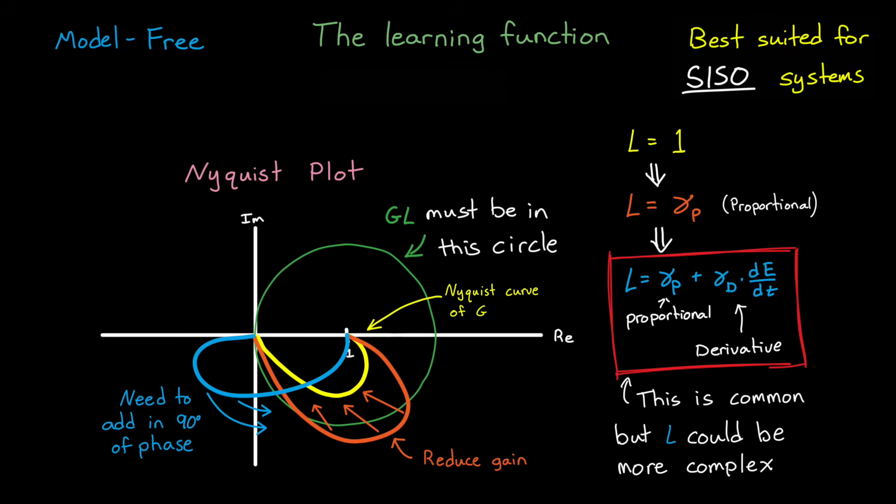But the bottom line is, we don't need an exact model of g to ensure that ILC converges. We just need to know enough about the system to guarantee that the Nyquist curve of gl is going to stay within the learning circle.